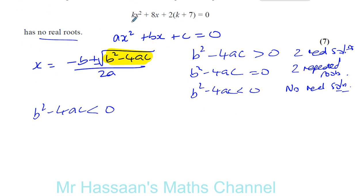If we look at our equation here, our a is k. The coefficient of x squared is the a. Our b is 8, it's the coefficient of x. And our c is 2 times k plus 7.